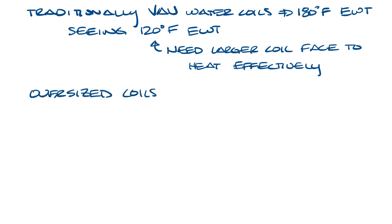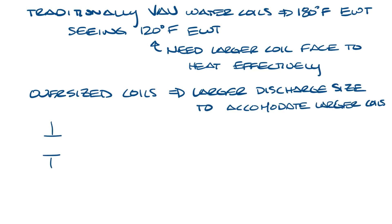On a VAV box, the water coil width and height is constrained by the discharge size of the VAV box. But you can get VAV boxes that have larger discharge sizes to accommodate larger water coils. If you have a 12 inch inlet single duct box, the discharge would be somewhere around 15 by 15 inches, and this is the water coil here on the end.